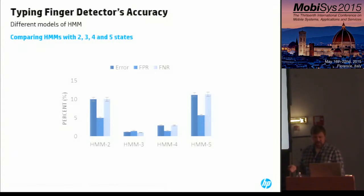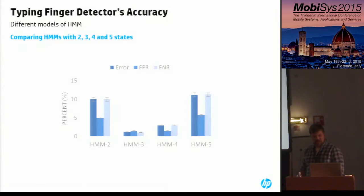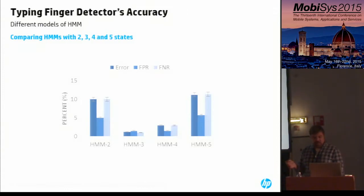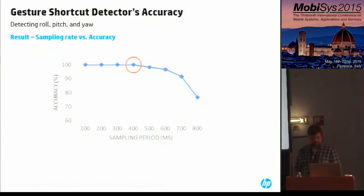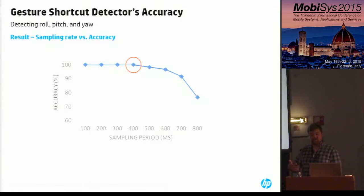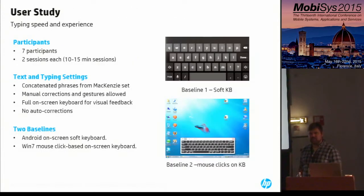This figure compares the classification error, false positive rate, and false negative rate of four different hidden Markov models, where the number denotes the number of hidden states. A three-state HMM is the best, with the lowest error rate of around 1.3% and less than 1.5% false positives and false negatives. HMM-3 is better than HMM-2 because it's more expressive and encodes more information, while HMM-4 and HMM-5 are not better due to their tendency to overfit training data and fail on unknown test examples. For the gesture recognizer, accuracy remains 100% up to a 400-millisecond sampling interval before dropping off, indicating 400ms is the right value for the tested user population.